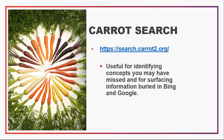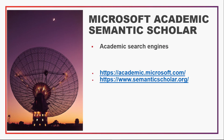Another alternative is Carrot Search, which gives you your search results in a visually appealing diagram that connects all the topics together. This can be useful for identifying concepts you may have missed and for surfacing information buried in the deeper realms of Google. You can also use Microsoft Academic and Semantic Scholar, which use artificial intelligence and semantic searching to cut through the clutter and give you results that are more relevant and impactful to your work.